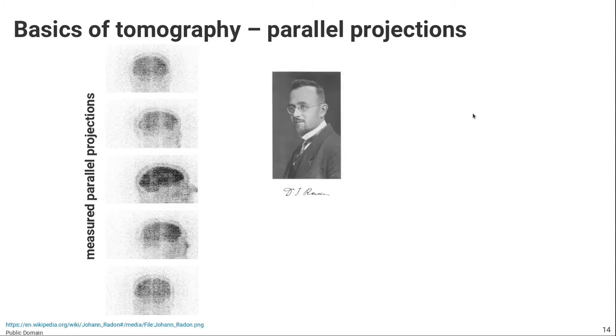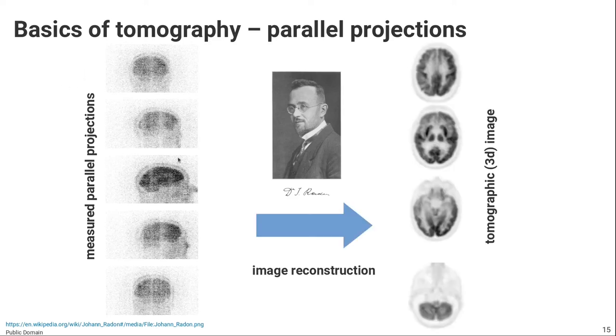And then actually it was shown already in the beginning of the 20th century, around 1917, by the Austrian mathematician Johann Radon that if you collect many of those projections or those line integrals and they are well sampled, you can actually reconstruct back the 3D distribution of your quantity of interest. In our case it would be the activity distribution or the tracer distribution.